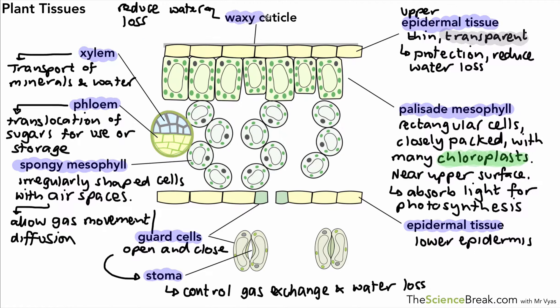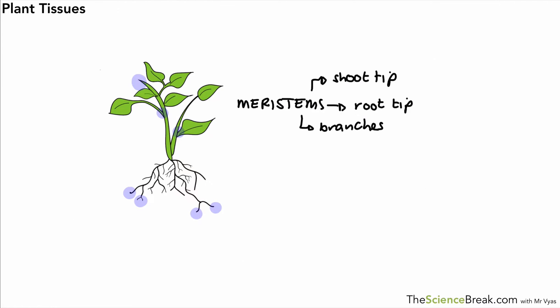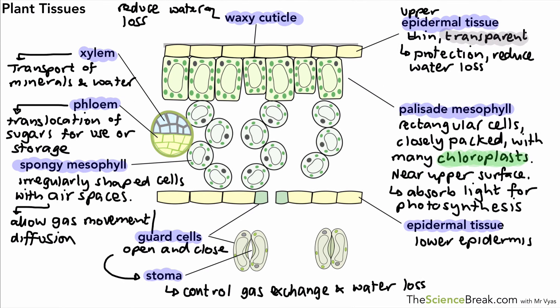Let's highlight the key points — these are the tissues you need to be able to describe the structure and function of in a plant. There's also one more type of tissue: meristem tissue, found at the shoot tip, the root tip, and sometimes on branches. The important thing about meristem tissue is that it is undifferentiated — meaning it can become any other kind of cell in the plant. This is a summary of plant tissues; there's lots of memory work but it needs to be done.